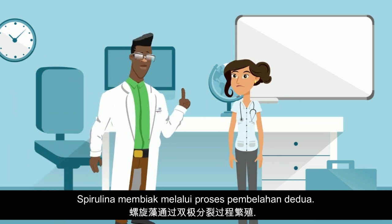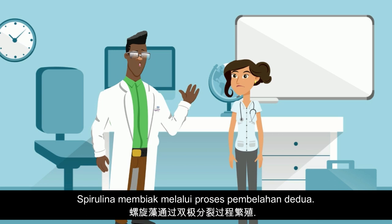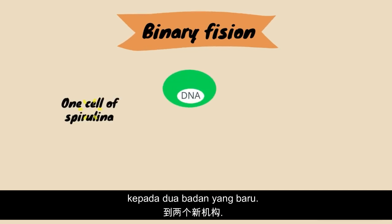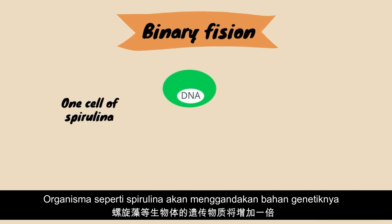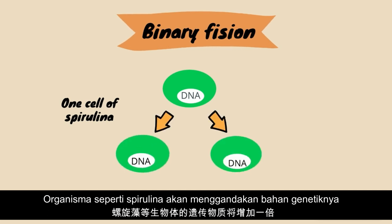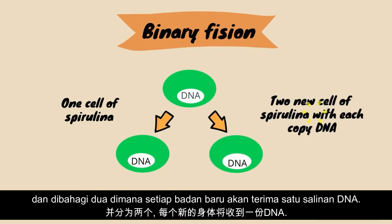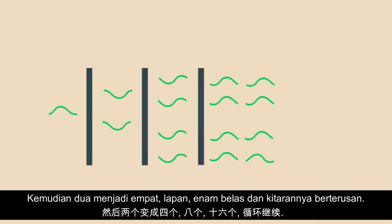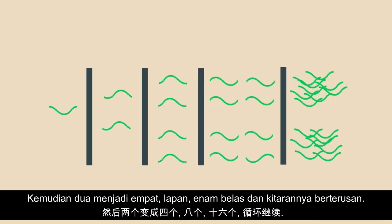Spirulina reproduces by binary fission. Binary fission is an asexual reproduction by separation of the body into two new bodies. In the process, an organism such as spirulina duplicates its genetic material and then divides into two parts, with each new organism receiving one copy of DNA. Then two become four, four become eight, eight becomes sixteen, and the cycle continues.